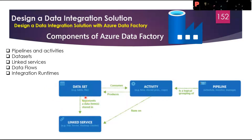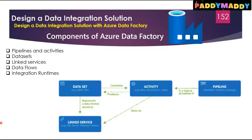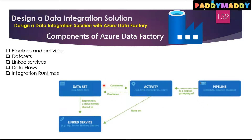Another component is the dataset — a data structure showing where data is stored, for example in a table or a file. Linked services are like connection strings — similar to a SQL server or Hadoop cluster — defining the required connection information for external resources. Data flow allows data engineers to develop data transformation logic without writing code, using existing Azure Data Factory scheduling, control flow, and monitoring capabilities.